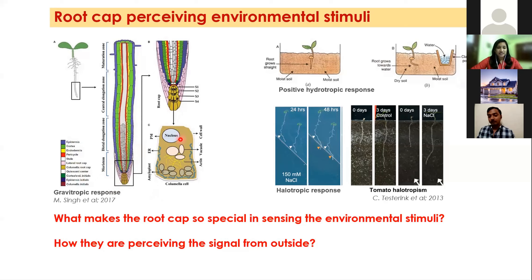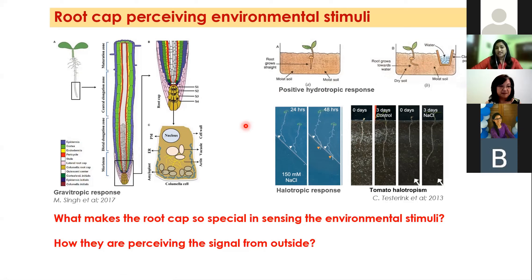For example, the gravitropic responses shown by the roots are due to the presence of statolith molecules in the columella cells. They also have some important role in positive hydrotropic responses — that is, plant roots try to grow towards water. Another important tropic response getting much attention in the last few years is the halotropic response, where plant roots try to grow away from high saline conditions.